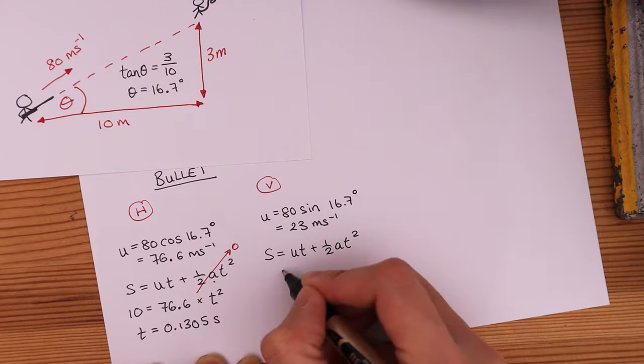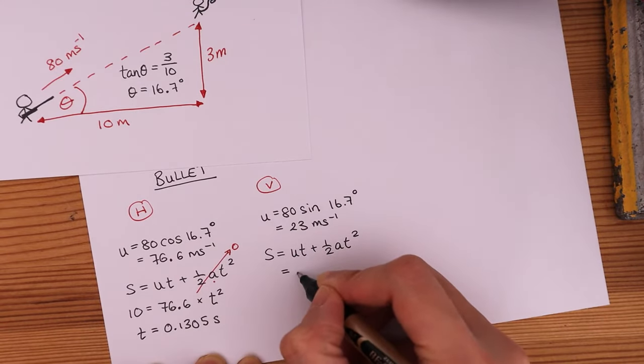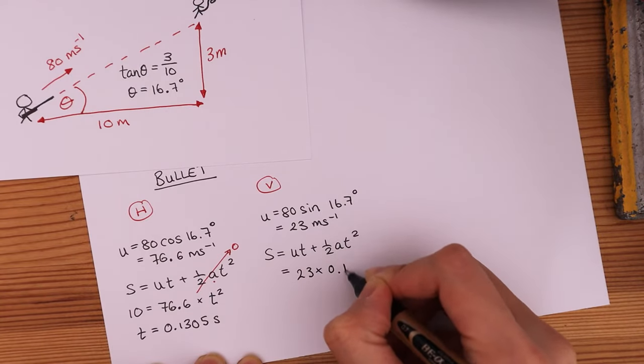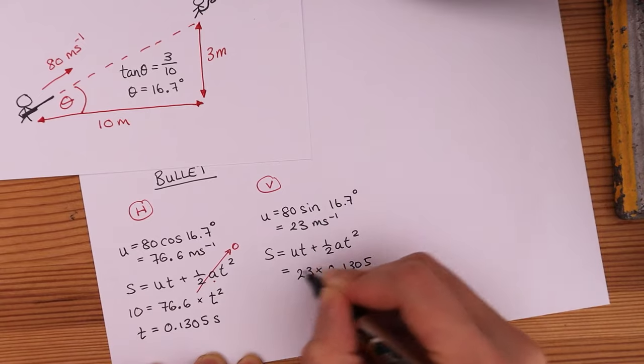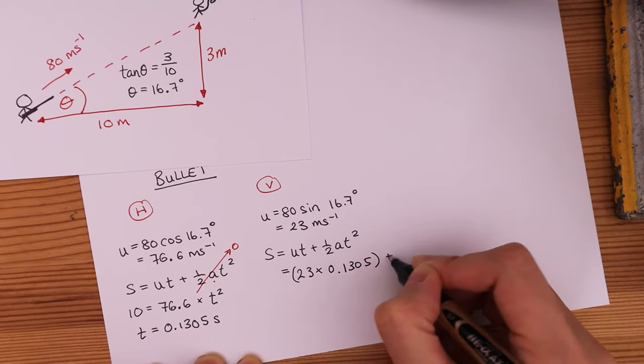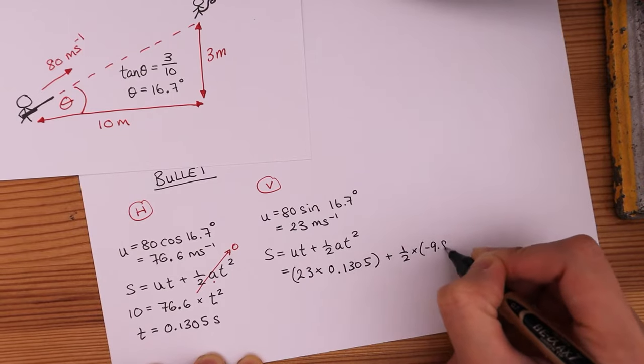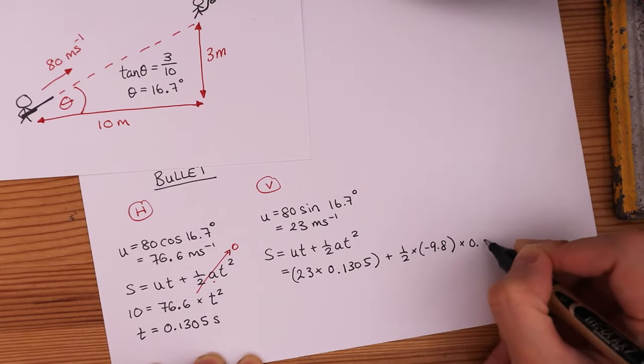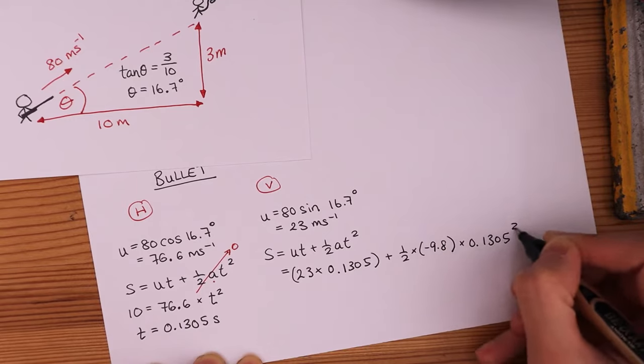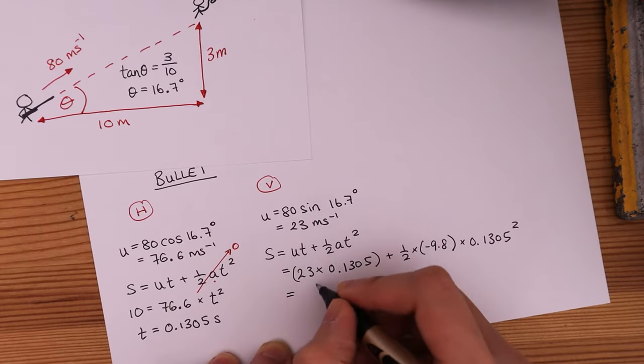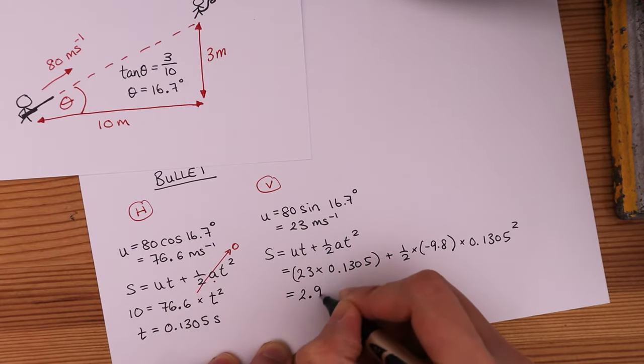The initial vertical velocity is 23. We've worked out the time of flight for this horizontal distance is 0.1305 seconds plus a half times minus 9.8 times 0.1305 squared. Acceleration is negative here because acceleration due to gravity is working against motion. This gives us 2.917 meters.